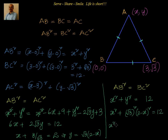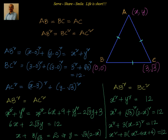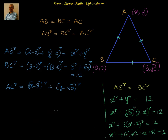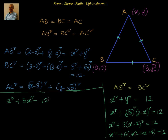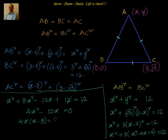Expanding: x² + 3·(x² − 4x + 4) = 12, so x² + 3x² − 12x + 12 = 12. This gives 4x² − 12x = 0, or 4x·(x − 3) = 0. Therefore, x = 0 or x = 3.